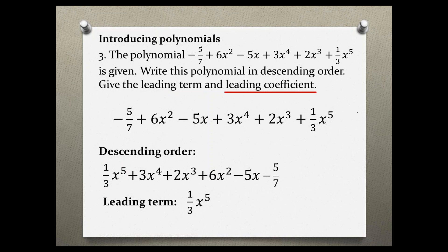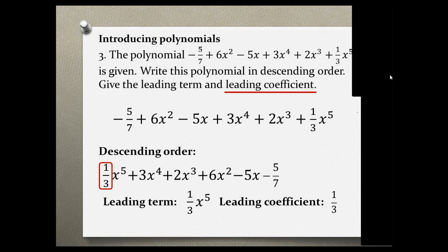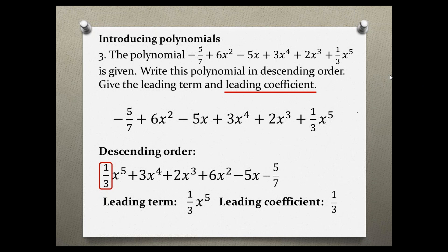Next, let's find the leading coefficient. The leading coefficient is the number in front of the variable in the leading term. In our case, it is 1 third. Again, if your polynomial is in descending order, the leading coefficient is the very first number. But if it is not in descending order, you first need to find the term with the highest degree — the highest exponent — and then take the coefficient in front of that term.